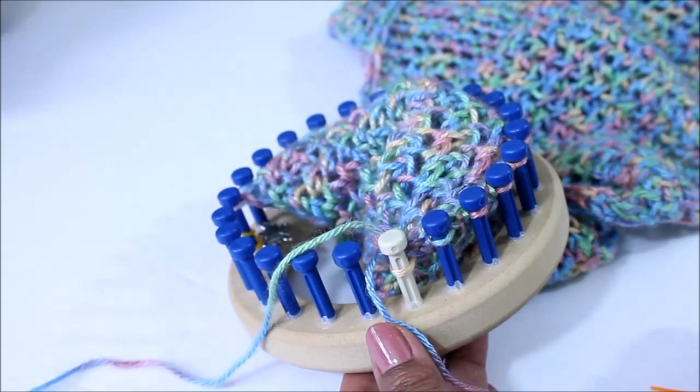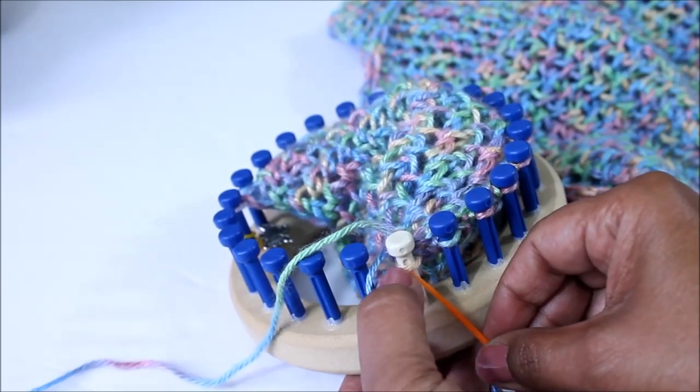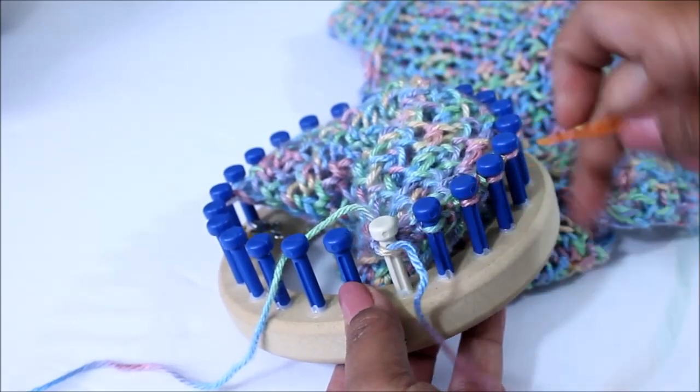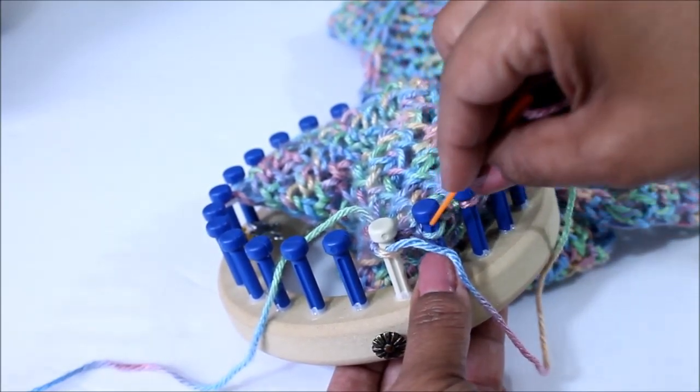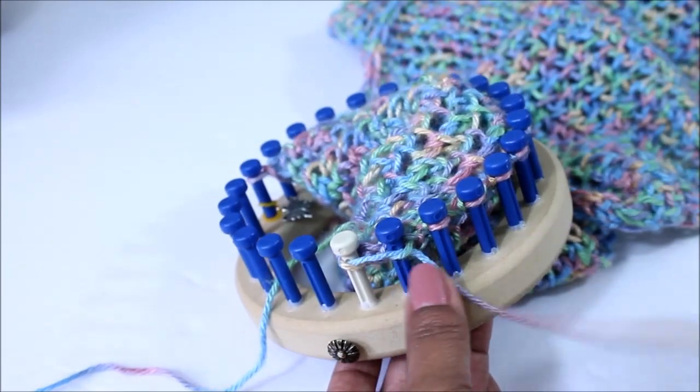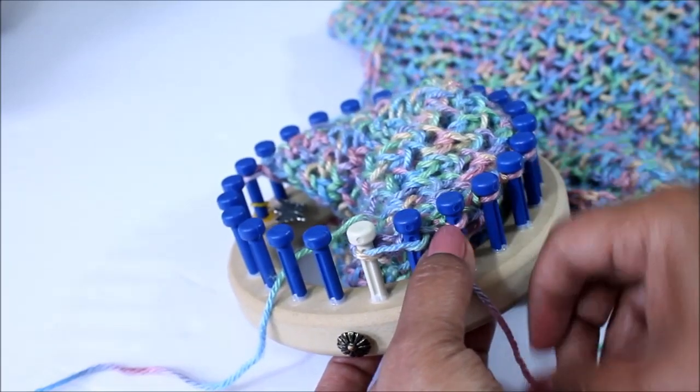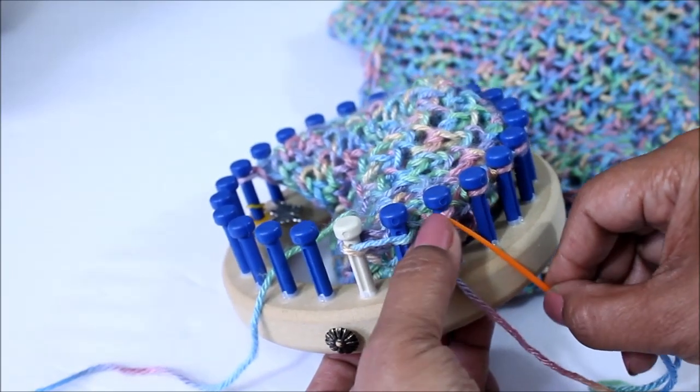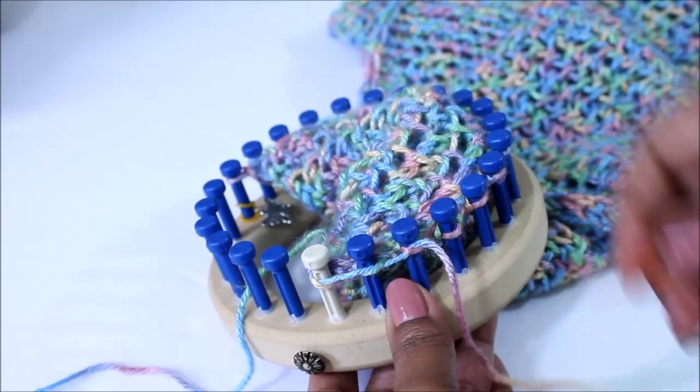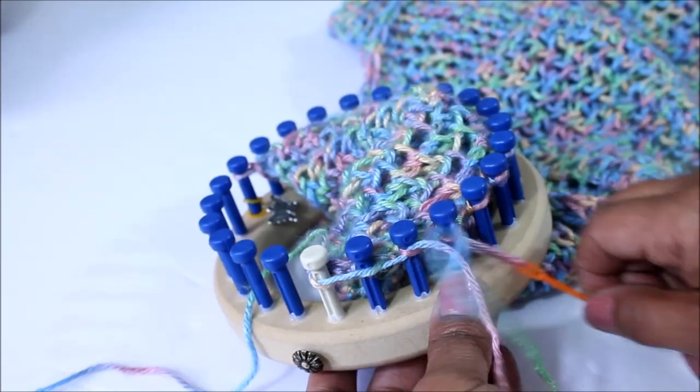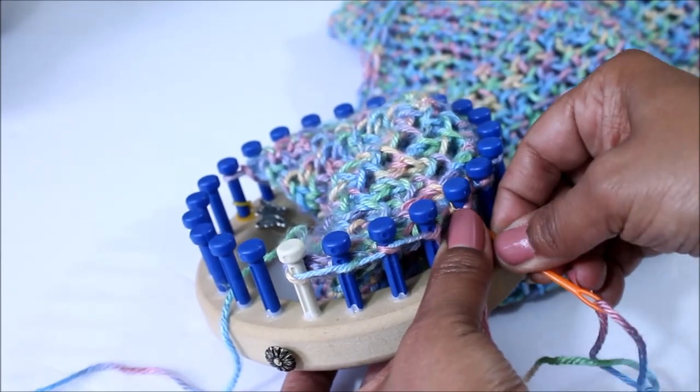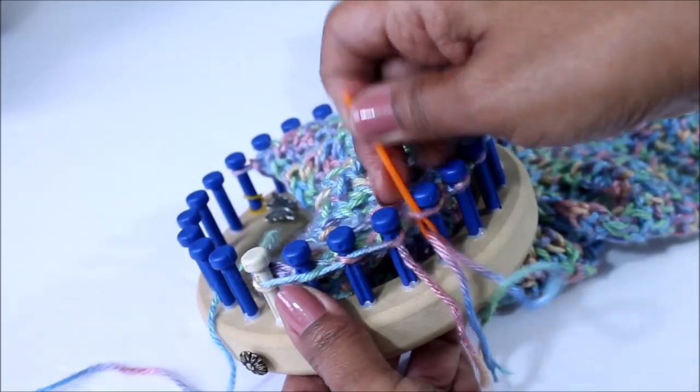You're going to take that needle and you're going to feed it from the bottom up on peg one and then you're going to go to peg two and this time you're going to feed from the top down and your next peg, you're going to do the opposite. You're going to do from the bottom up right here and then on the next peg, you're going to go from the top down and as you can see there's a little pattern going on here so you're going to alternate from the bottom up and the next one then from the top down.